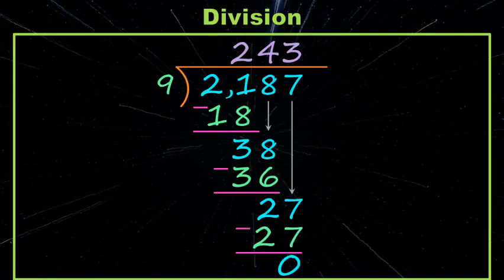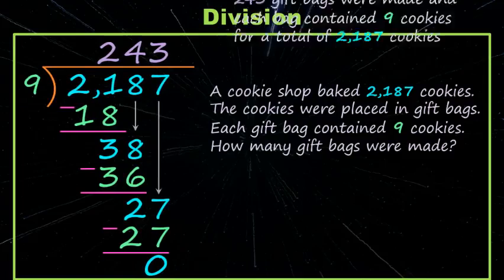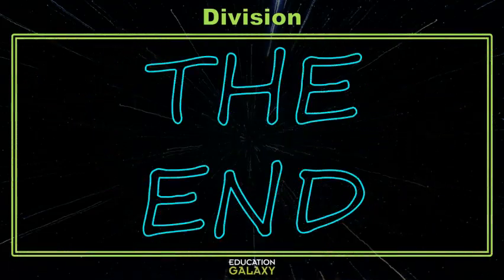Now what was it we were trying to figure out? Oh yes, we were putting the cookies into bags and we put nine in each bag. We want to know how many bags were made. We made 243 gift bags each containing nine cookies for a total of 2,187 cookies. Yummy! Now it's your turn to practice division.